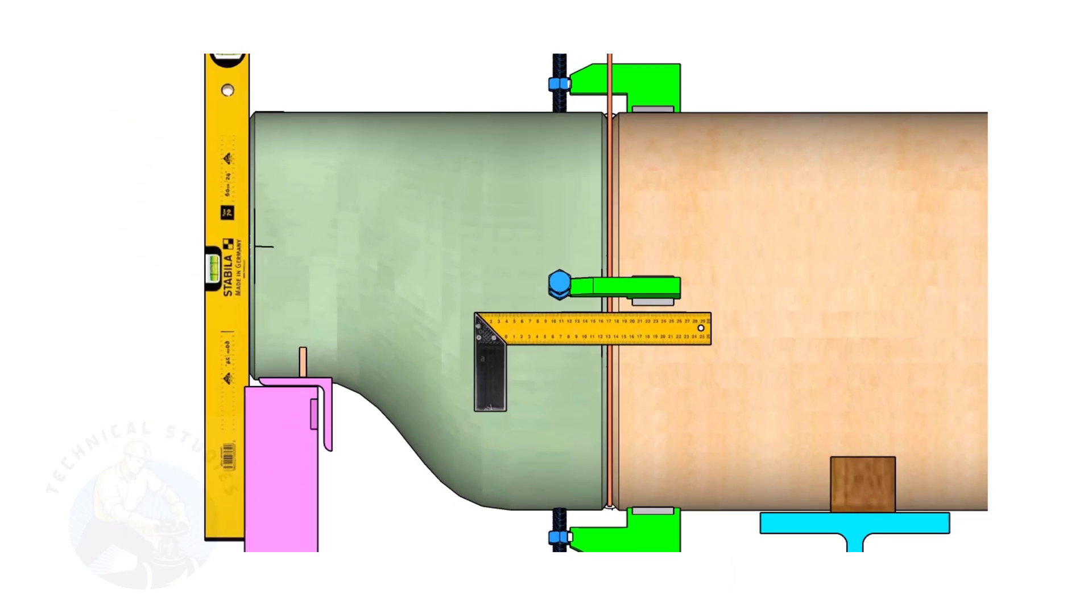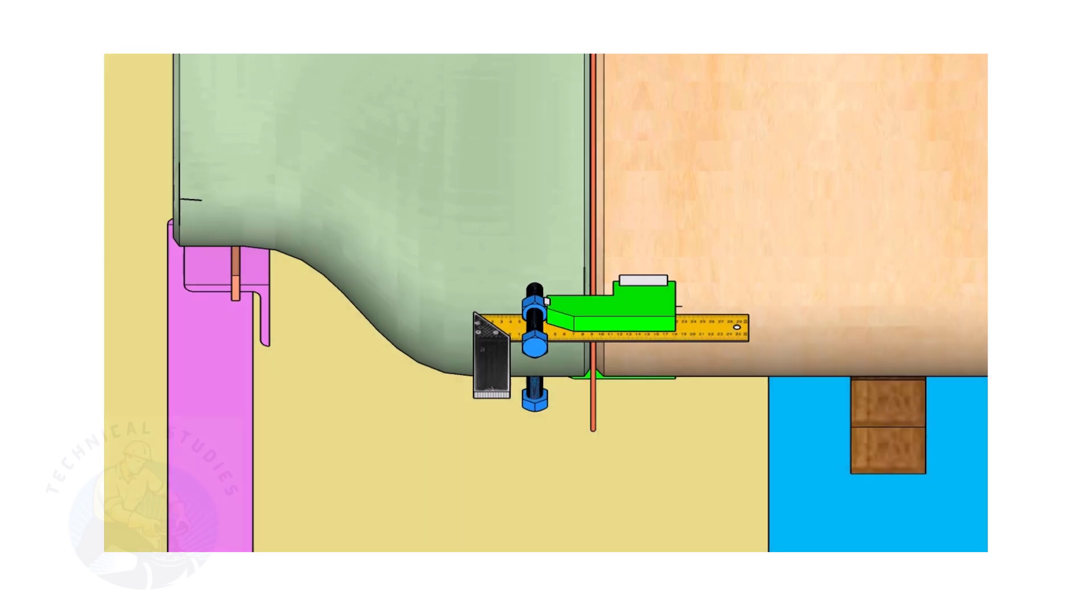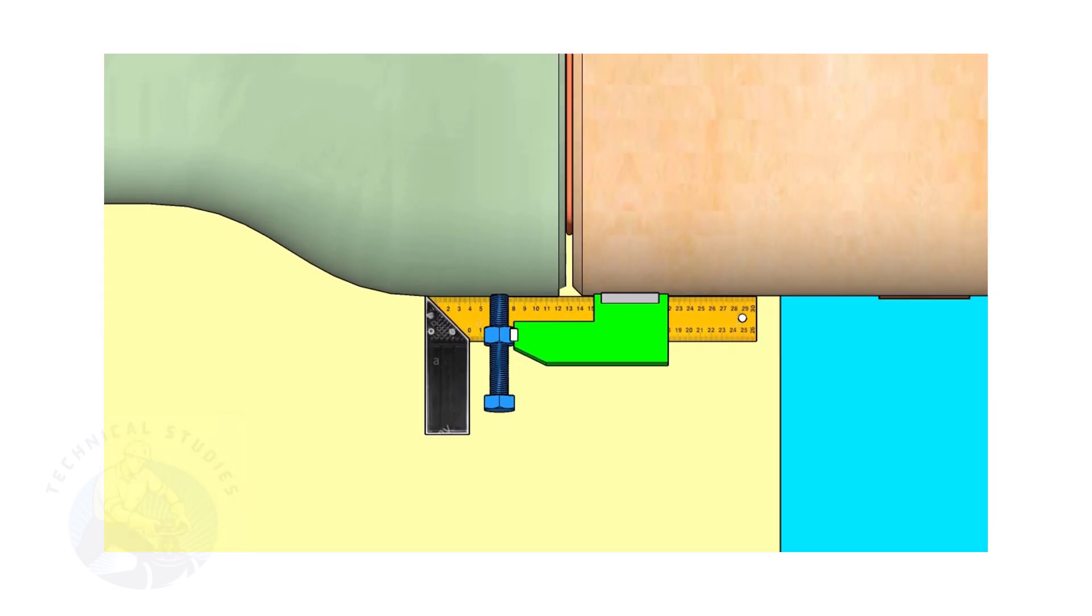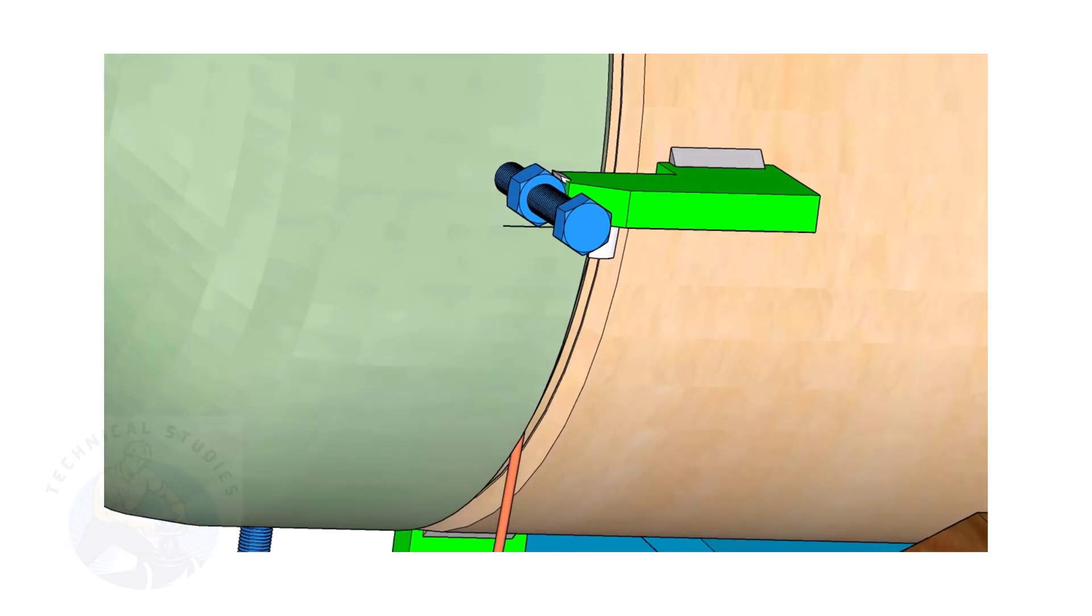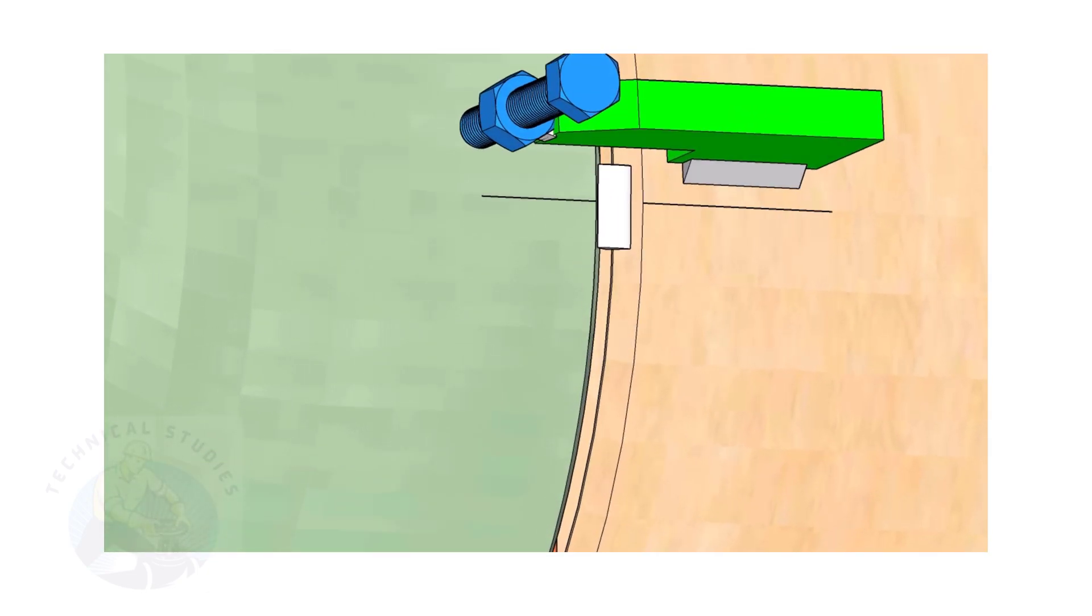Correct the straightness of the joint on both sides. If required, remove the gap rod. Tack weld on both sides.